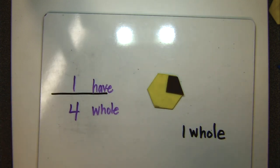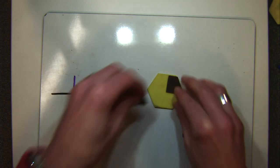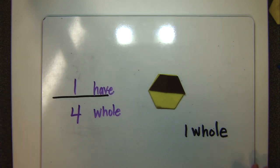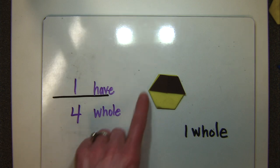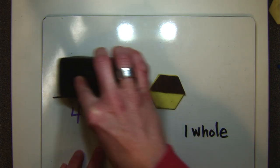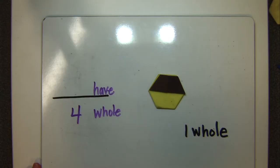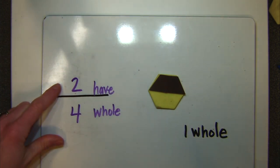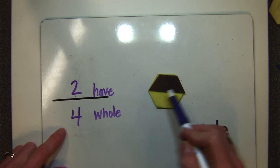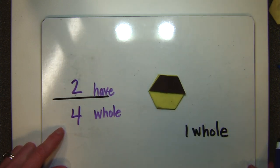Now I'm going to challenge you a little bit. If I grab another brown quadrilateral and add it to this model, we no longer have one fourth. What number changes? We still need four brown quadrilaterals to make a whole — that doesn't change. But our numerator will change. How many brown quadrilaterals do we now have in this model? We have two. So the numerator changes depending on how many you have; your denominator, when you're sticking with the same shape, is not going to change.